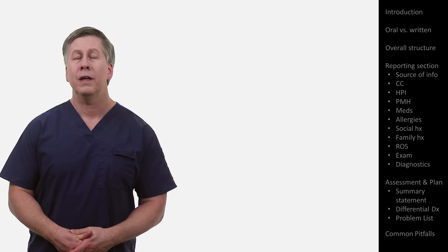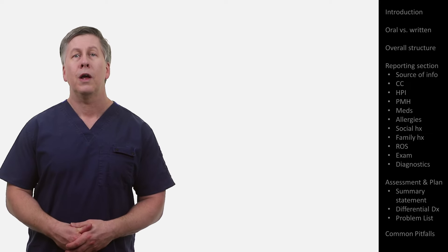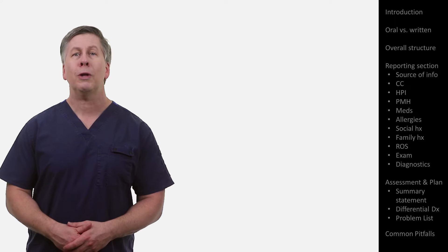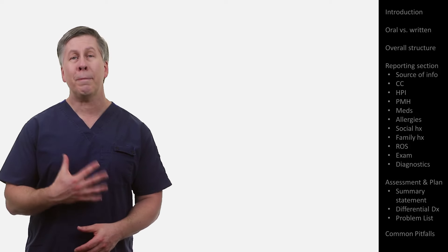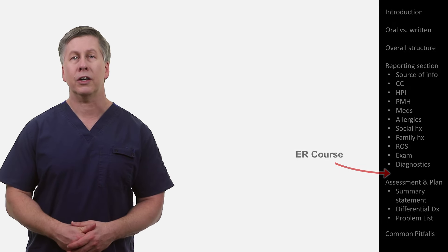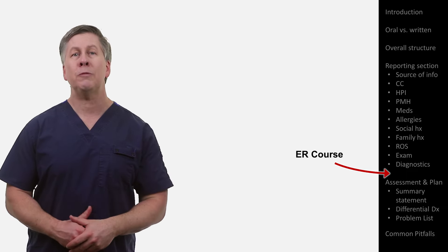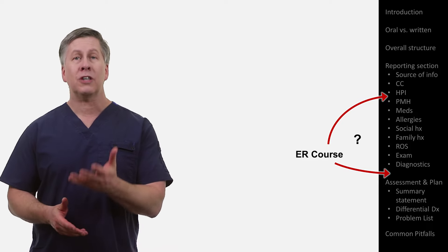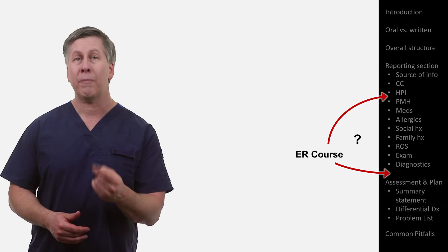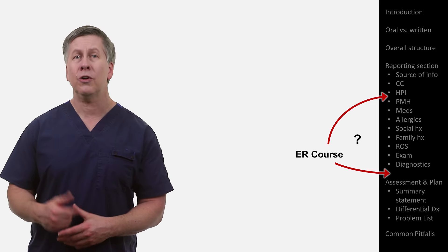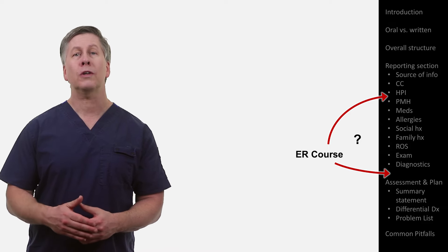Although it isn't a traditional part of the H&P, it has become standard practice for patients being admitted through the emergency room to include a section for ER course. This is usually a bulleted list of treatments provided to the patient in the ER, plus or minus the major exam or test findings, and plus or minus the ER suspected diagnosis that led to those treatments. The most appropriate place to include the ER course is at the very end of the reporting section; however, in my experience, most interns seem to prefer to include it at the end of the HPI. While there is value in summarizing the ER course prior to reporting your physical exam, this has a tendency to bias the audience towards the ER's diagnosis — a form of cognitive bias called diagnostic momentum or momentum bias.